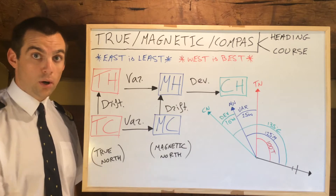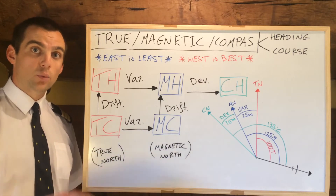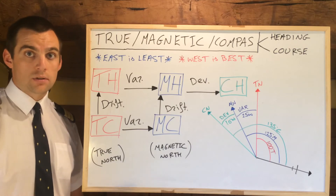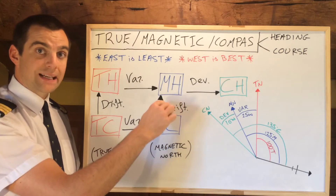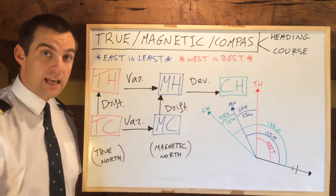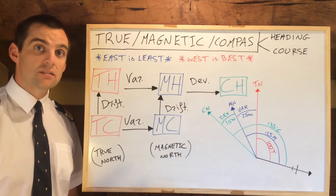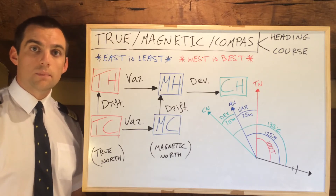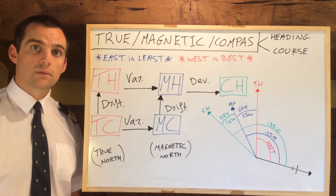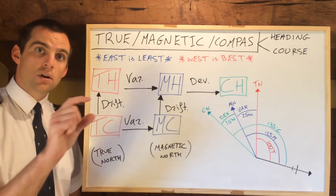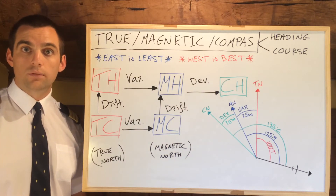The magnetic north pole is actually constantly moving. Not only that, but as we move around the world the variation will change — it's specific to a location on the earth and will be given to us. Finally, once we know our magnetic heading, we can find our compass heading by adding in the deviation angle. Deviation is essentially a compass error due to equipment systems — the compass being close to radios, being in a big metal box. These are normally printed on the little chart below the compass, or given to you in one form or another.